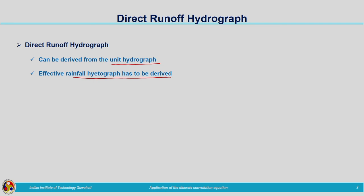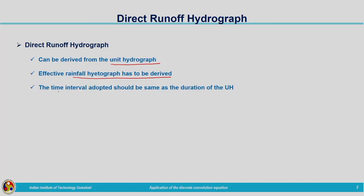How can we get the effective rainfall hydrograph? First we need to determine the initial abstractions that we need to deduct from the total rainfall hydrograph — that will give us the effective rainfall hydrograph. The time interval adopted should be the same as the duration of the unit hydrograph. Identifying effective rainfall having the same time interval as the duration of the unit hydrograph is slightly difficult because rainfall is a continuous event that varies with respect to time.